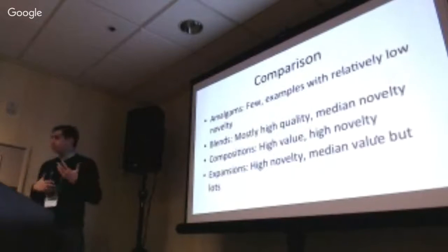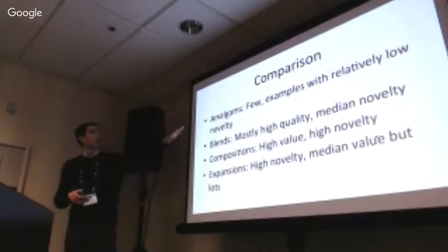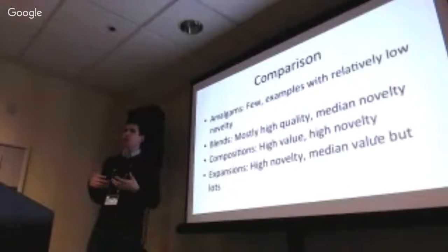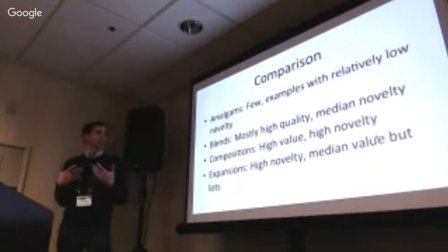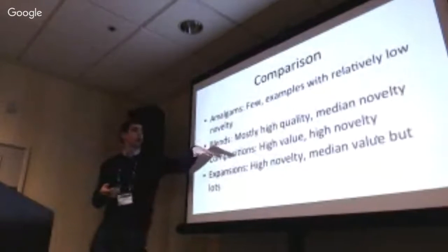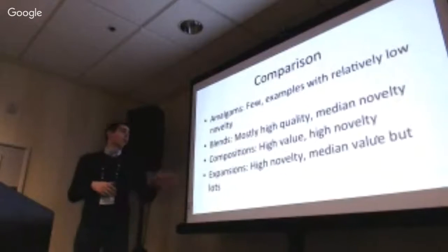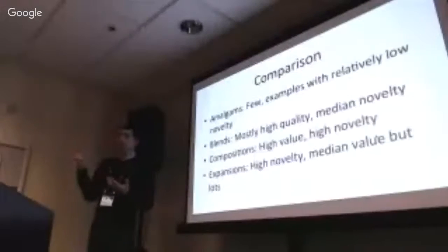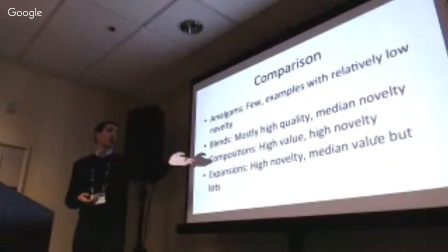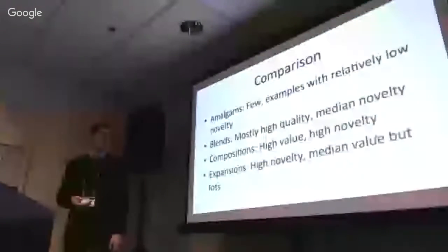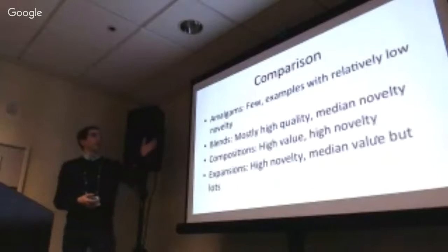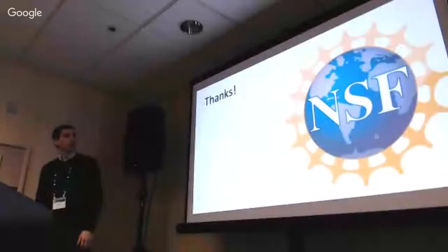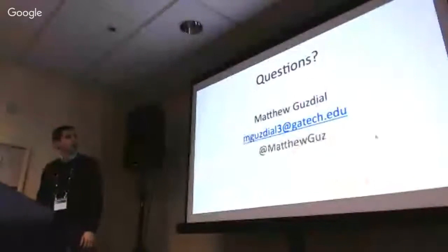In summary: amalgams give a few examples with relatively low novelty — maybe that's okay if you want things more like the input. Blends give mostly higher quality with medium novelty. Compositions give both high value and high novelty, but throw out a lot. Expansions give high novelty and median value with lots of output. So there are cases where you might want to use each of these. Thanks to the NSF for supporting this work.